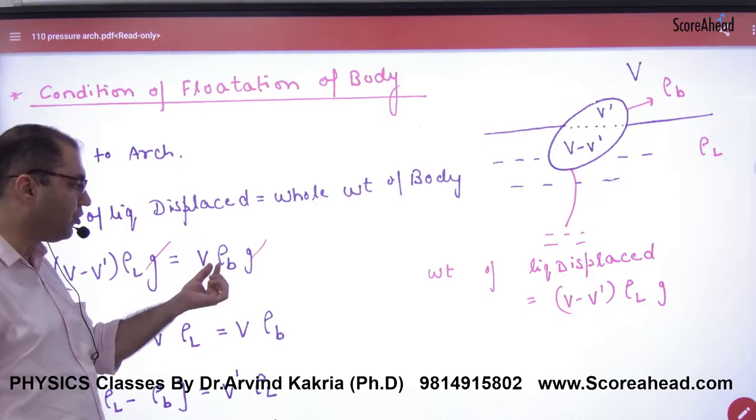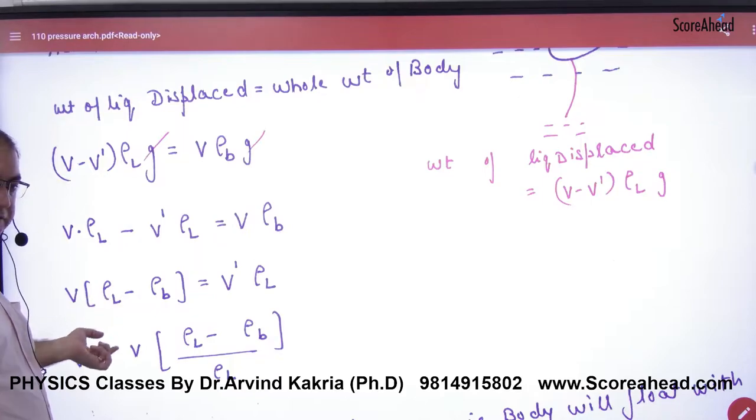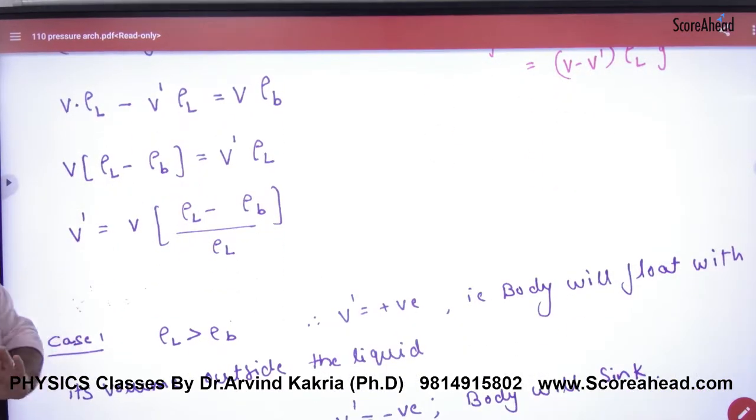Volume of body, density of body into g. So you solve this and open it. Here V terms from one side and what do you do here? V dash. So V dash. And one more thing.